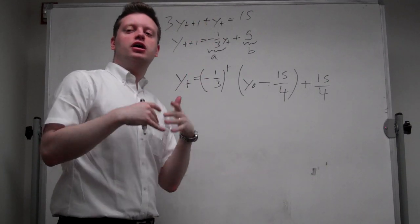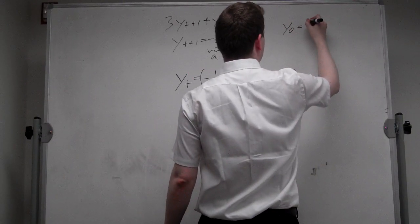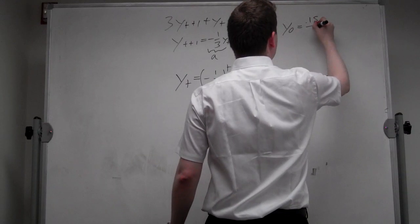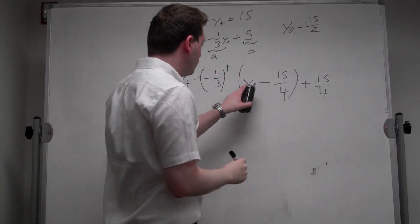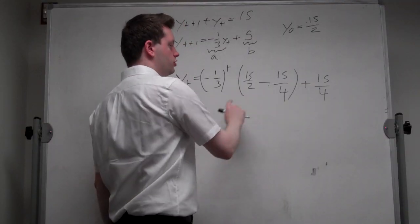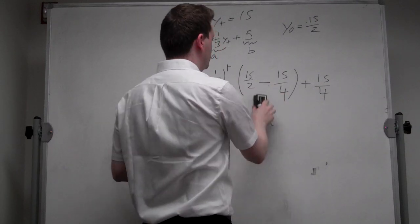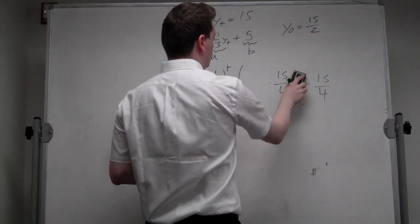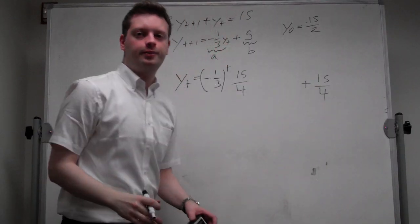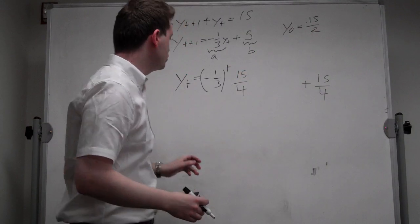Let's assume you're given an initial condition y0 equals 15 over 2. Then you can rewrite this equation with y0 equal to 15 over 2 here — 15 over 2 minus 15 over 4 is simply 15 over 4. So we can write yt equals minus 1/3 to the t times 15 over 4, plus 15 over 4. This is the general solution with this initial condition, so let's draw this.